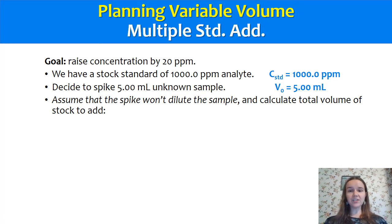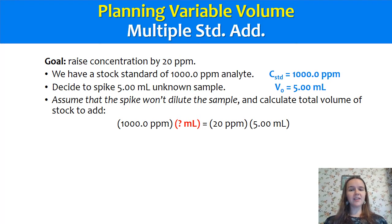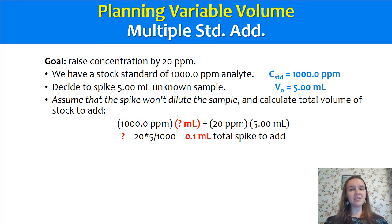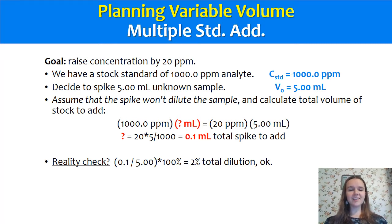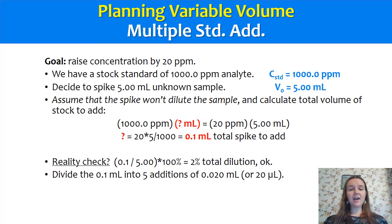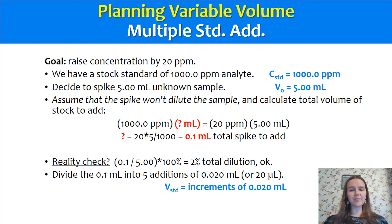We calculate the total volume of stock to add using the M1V1 = M2V2 dilution equation. On the left side we have 1,000 ppm of the stock standard; we don't know its volume yet. Once that concentrated stock is diluted into the 5 mils of sample, it will raise the concentration by 20 ppm. When you solve this, you get 0.1 milliliters of total spike to add to reach that 20 ppm increase in our 5 mils of sample. As a quick reality check, 0.1 mils is only a 2% dilution relative to the 5 mils, so the assumption that your spike isn't diluting the sample very much holds. Since we've decided the total amount of spike needed, we divide it into several intervals — 0.1 mil divided by five additions gives 0.02 mils or 20 microliters each with a microliter pipette.